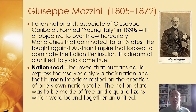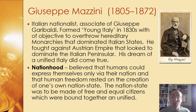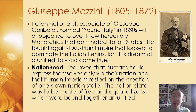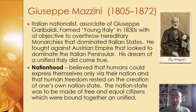Giuseppe Mazzini, 1805 to 1872, is a really famous Italian nationalist. He's associated with another Giuseppe — Giuseppe Garibaldi. He formed Young Italy in the 1830s with the objective of overthrowing hereditary monarchies that dominated a lot of the Italian states. Italy wasn't a single nation at this point — it was made up of a multitude of different states, either independent or controlled by other groups or empires. He fought against the Austrian Empire that was trying to dominate the Italian peninsula.